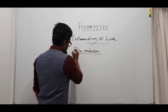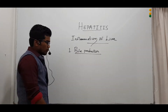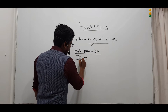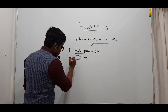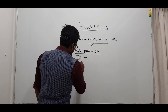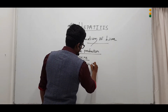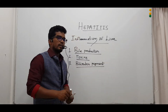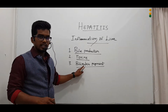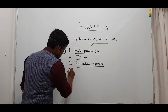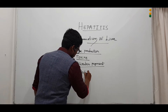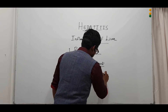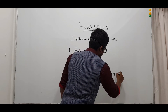Firstly, the production of bile is affected, which is very important for the process of digestion. Moving ahead, even toxins in the liver are also not filtered properly. Thirdly, the bilirubin pigment — formed by the breakdown of RBCs — its excretion is affected. Also, the excretion of cholesterol, drugs, as well as hormones is affected.